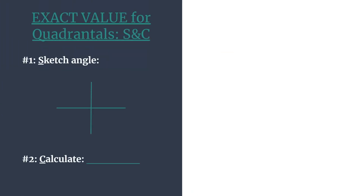Here's our simplified template. S will be for sketching the angle's terminal side. We'll quickly get the coordinates from that, and then we'll be able to calculate our trig ratio.